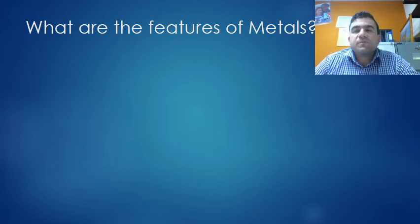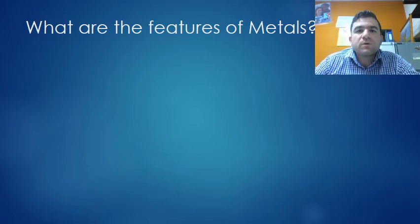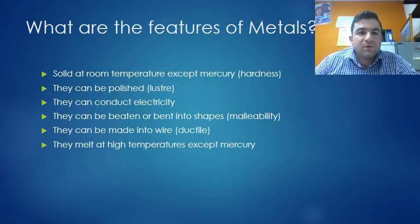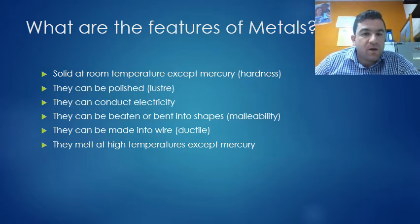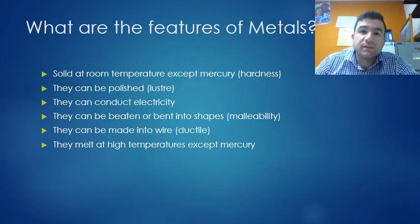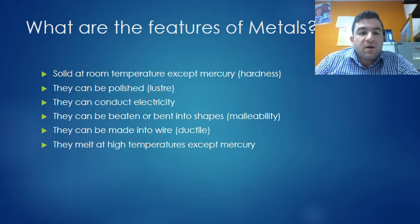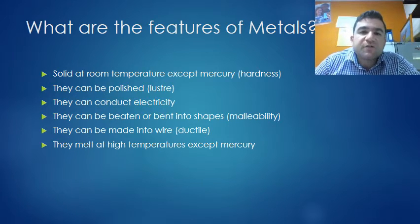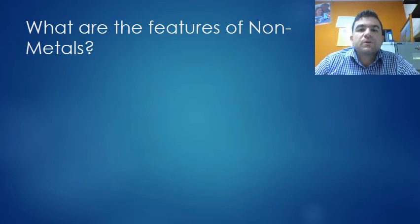What are the features of metals? Think about what you have around you. They're solid at room temperature except for mercury - we call that hardness. They can be polished - we call that luster. They conduct electricity - think about all the wires for all your appliances. They can be beaten or bent into shapes, so they're malleable. They can be made into wire, so they're ductile. They melt at high temperatures, obviously except for mercury because it's a liquid at room temperature.